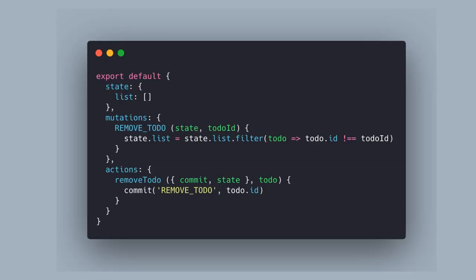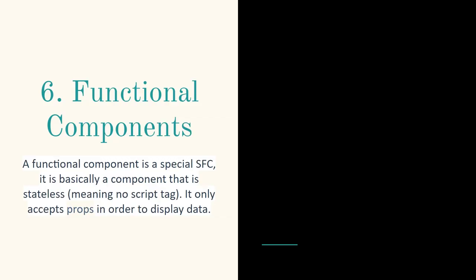Here's a short Vuex example: you have the state object, mutations, and actions, and you can then reference that inside your components. When you start off, you'll be looking at single file components — usually set up with Vue CLI — which have your template at the top, then a script tag, and then CSS at the bottom, all on one file.